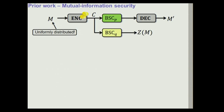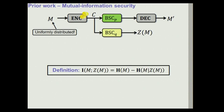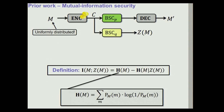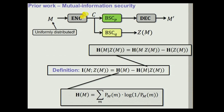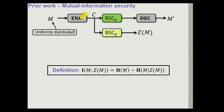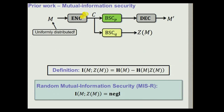The traditional security notion used so far is based on mutual information between the message sent by the sender and the noisy ciphertext Z(M) received by the wiretapper. Mutual information is defined in terms of the difference between the entropy of the message and the conditional entropy of the message given the noisy ciphertext, where entropies are in the sense of Shannon entropy. The usual requirement in the literature is that this mutual information for a uniformly distributed random message M be negligible or very small — ideally zero, but that cannot be achieved.